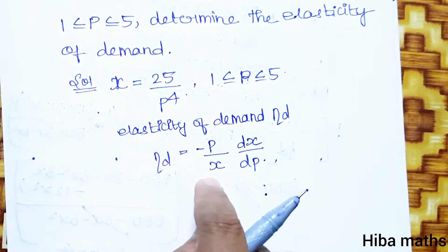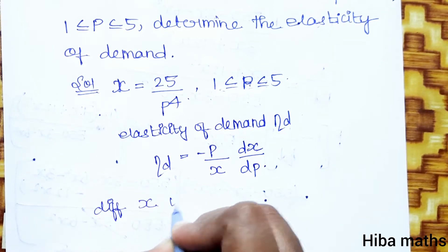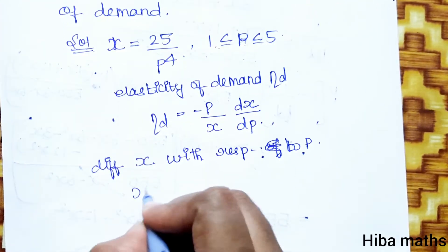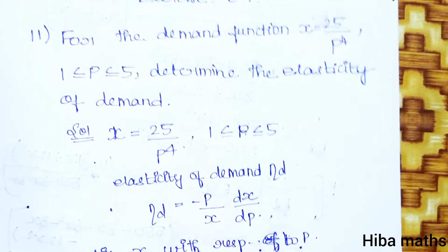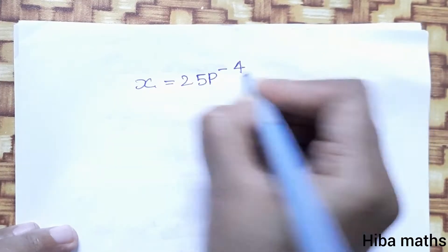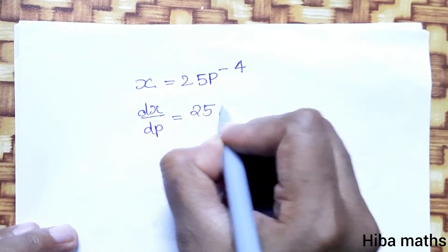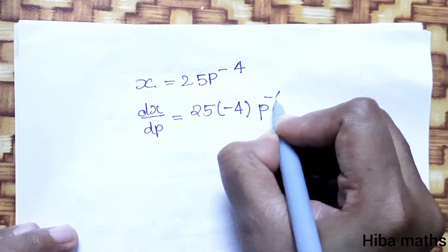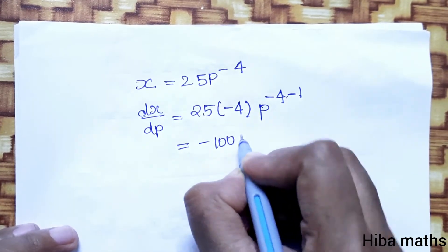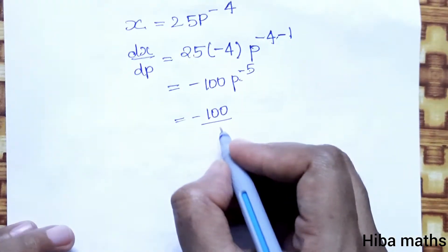Now we compute dx by dp. Since x equals 25 times p to the power minus 4, differentiating gives 25 times minus 4 times p to the power minus 5, which equals minus 100 divided by p to the power 5.